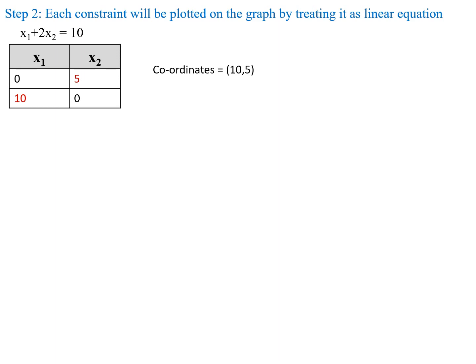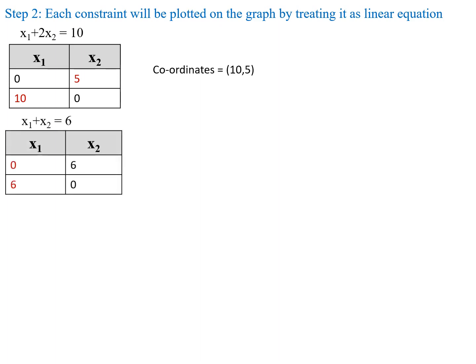Similarly, for the second constraint equation: if x1 equal to 0 then x2 equal to 6. If x2 equal to 0 then x1 equal to 6. So the coordinates are (6, 6).